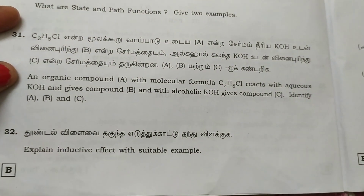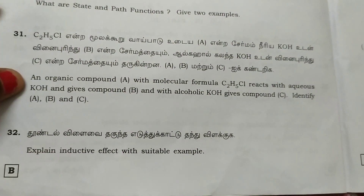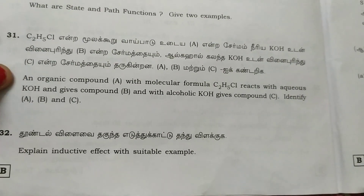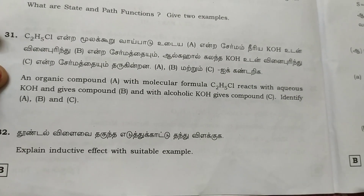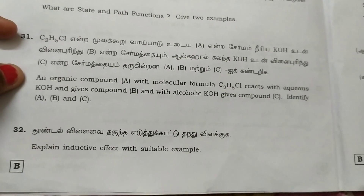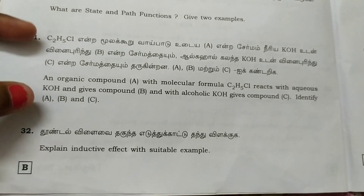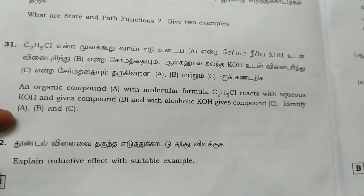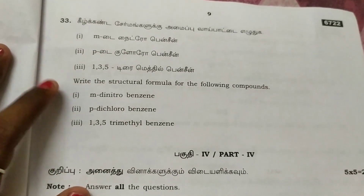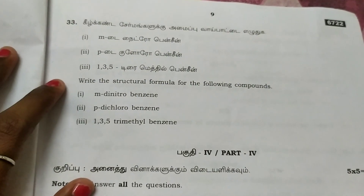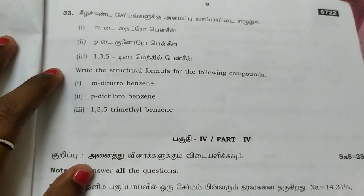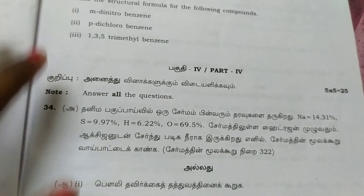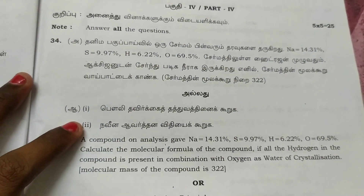An organic compound with molecular formula C2H5Cl reacts with aqueous KOH to give compound B. With alcoholic KOH it gives compound C. Identify A, B, and C. Explain the inductive effect with a suitable example. Write the structural formula — the 5-mark questions.